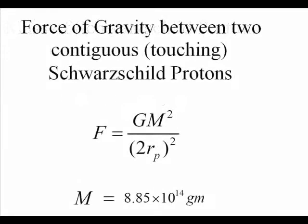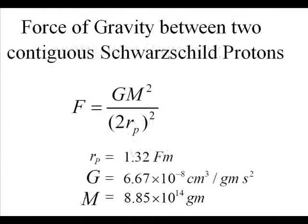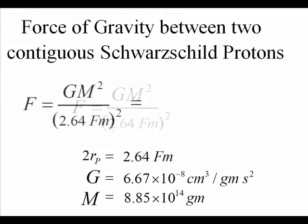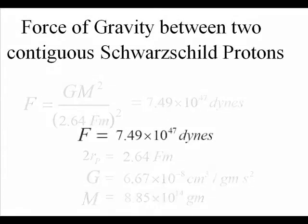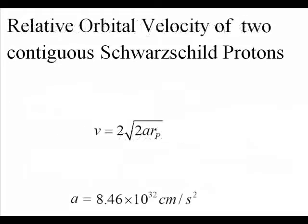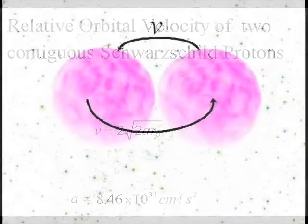Haramein then uses this mass to calculate the gravitational force between two contiguous Schwarzschild protons using the semi-classical approach. We yield a gravitational force of 7.49 times 10 to the 47th dynes.